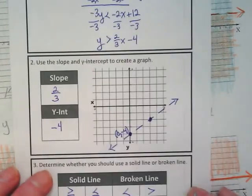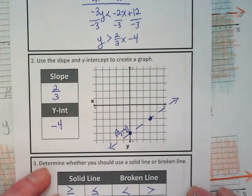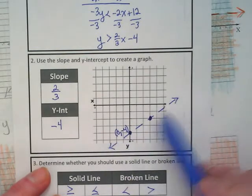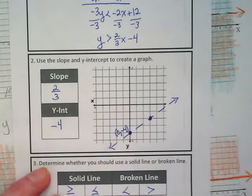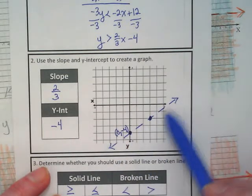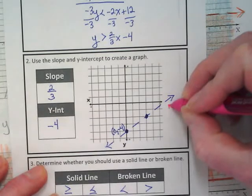Now here's one of the big differences between graphing equations. If I was graphing the equation, if this said equal to, the line itself in solid form would be my answer, and any point that fell upon that line would be my answer. But with an inequality, this isn't just a line. This line is a boundary.